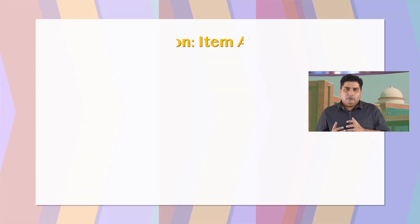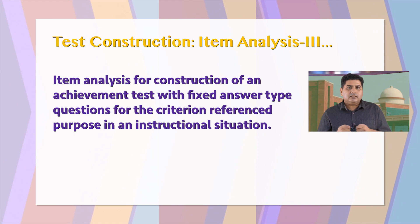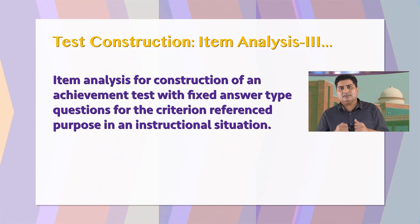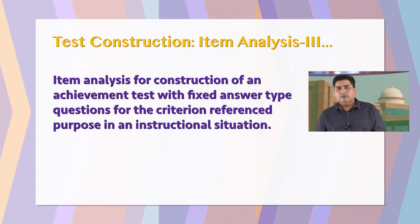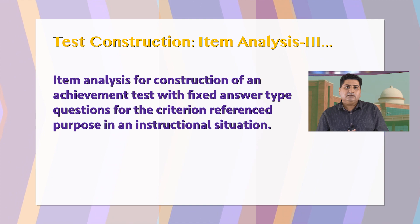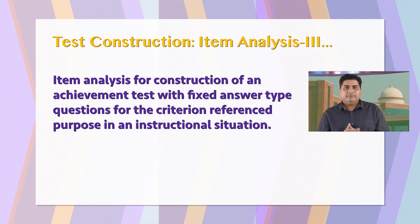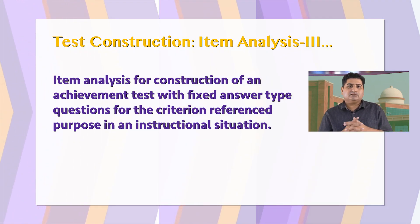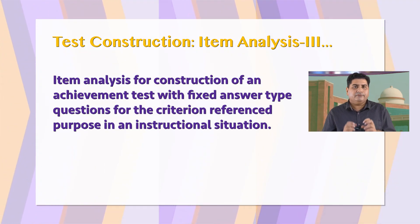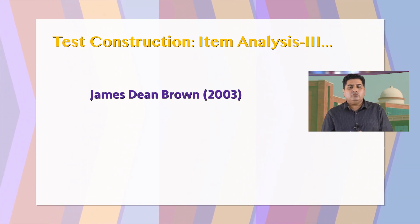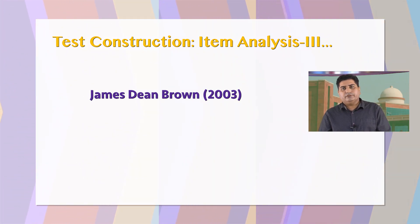We have also discussed item analysis for achievement test with fixed answer type questions, and item analysis for scales for measuring attitudes, personality, etc. Now, if we are going to construct an achievement test with fixed answer type questions for the criterion reference purpose in an instructional situation, then the procedure of item analysis would be a little different. This discussion is about item analysis for the construction of such criterion reference achievement test, and is primarily based on the discussion by James Dean Brown in 2003.